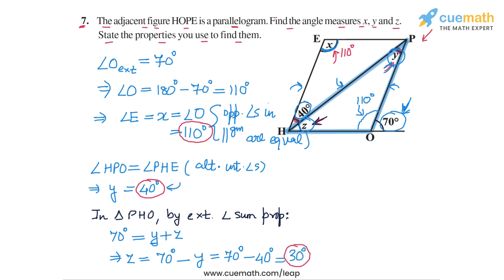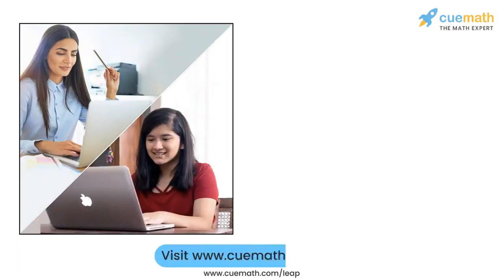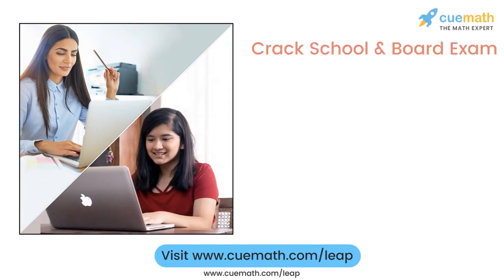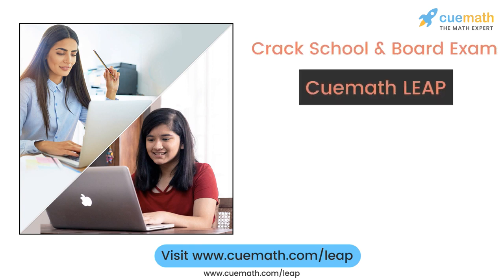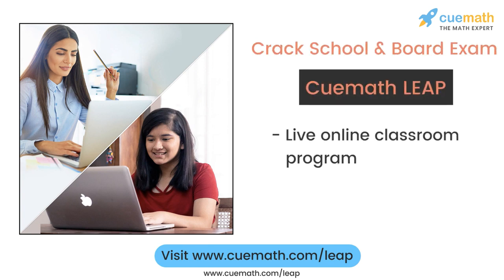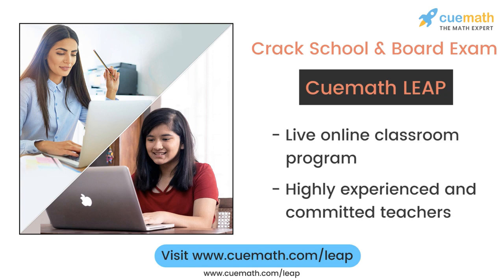That's the answer to this question. The measure of X is 110 degrees, the measure of Y is 40 degrees, and the measure of Z is 30 degrees. This completes question number 7. To learn more about how QMath can help you crack school and board exams, explore QMath Leap, a live online classroom program run by highly experienced and committed teachers.